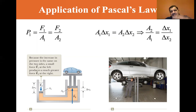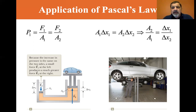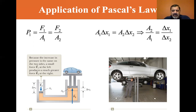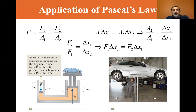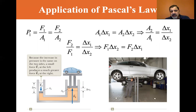The volume pushed down equals the volume pushed up, so A₁·Δx₁ equals A₂·Δx₂. The ratio of A₂ to A₁ equals Δx₁ over Δx₂, giving mechanical advantage. This is like a hydraulic jack — you move your arm through many small Δx strokes to achieve a small but powerful lift, and F₁·Δx₁ equals F₂·Δx₂.